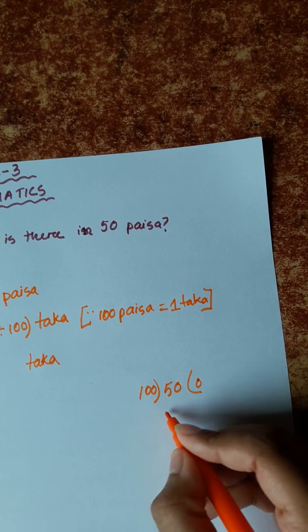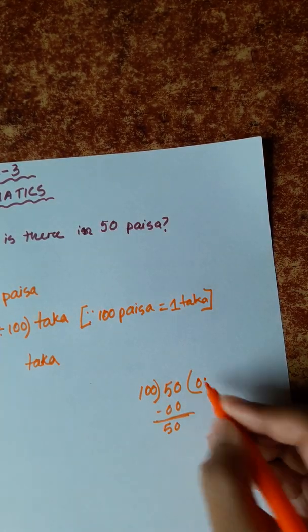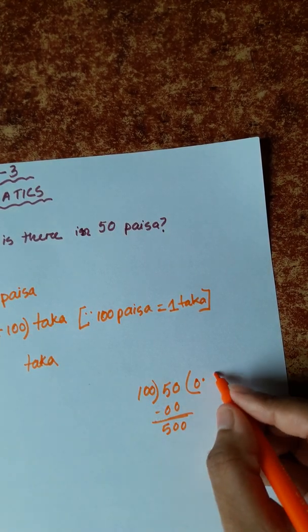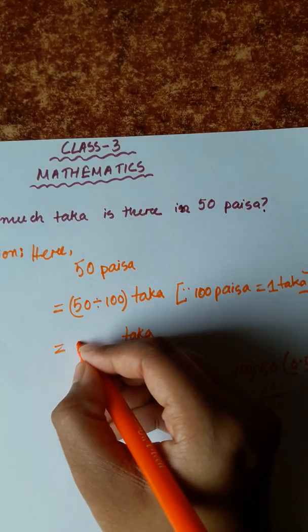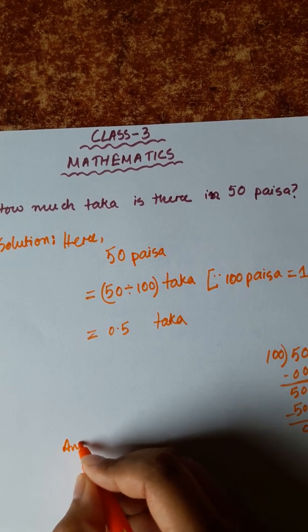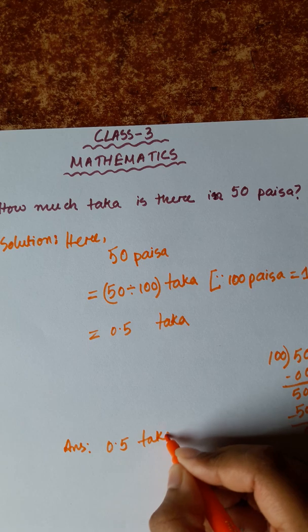100 0s are 0, then decimal, then 100 5s are 500. So 0.5. So answer is 0.5 Taka.